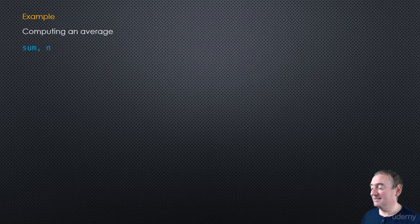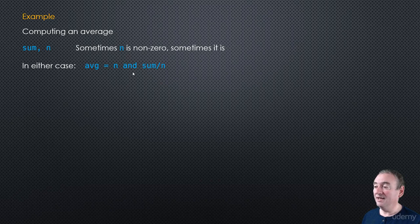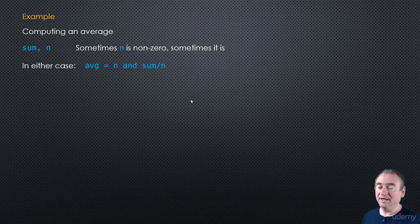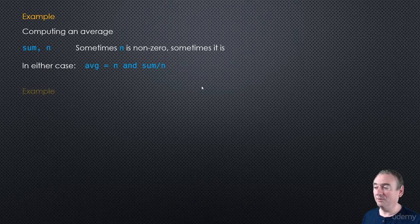Let's take the average example: we have sum and n. The average is n and sum / n. Because if n is zero — we have no count — the average is zero, so we return zero. On the other hand, if n is non-zero, it will compute sum / n, which is the actual average.